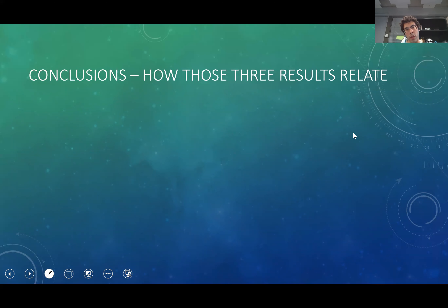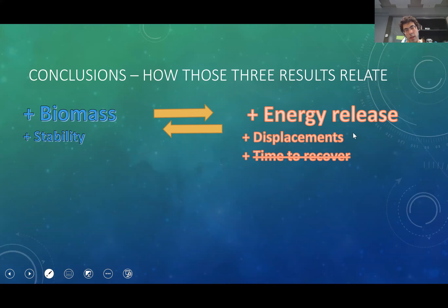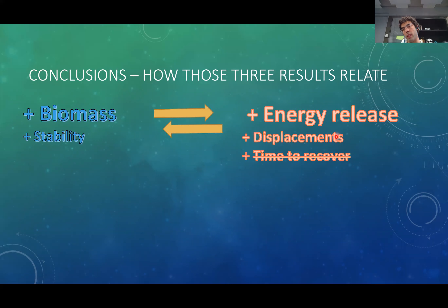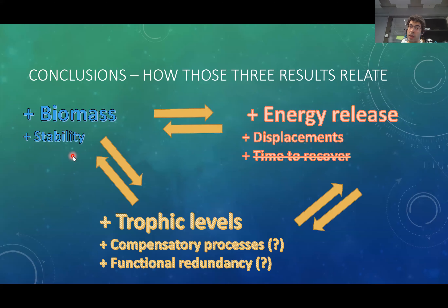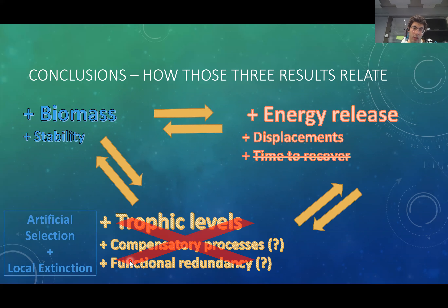In summary, there seems to be a real trade-off between eutrophication, biomass, stability, and the amount of energy released — especially the amount of displacement. We couldn't see a clear signal in time to recovery, mostly because the system didn't recover. We are not able to associate secondary trade-offs between biomass, trophic levels, energy release, and compensatory or functional redundancy processes, especially because our system is closed, suffering strong artificial selection by hydrogen peroxide, with local extinctions that cannot be resupplied by metacommunity dynamics — which is very important for resilience and resistance processes.